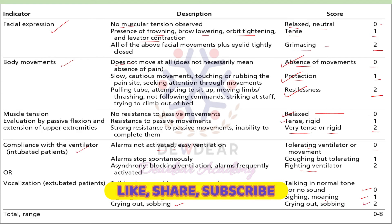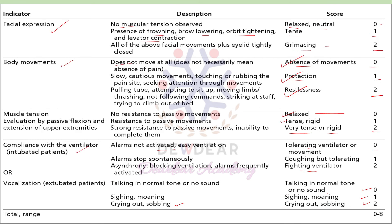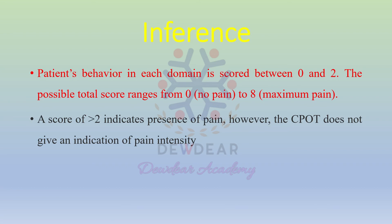The maximum total CPOT score is 8 and the minimum is 0. A score greater than 2 indicates presence of pain. However, CPOT does not give an indication of pain intensity — it only indicates the presence or absence of pain.